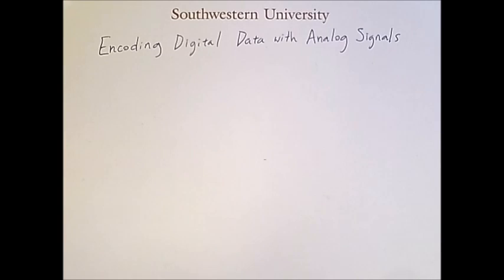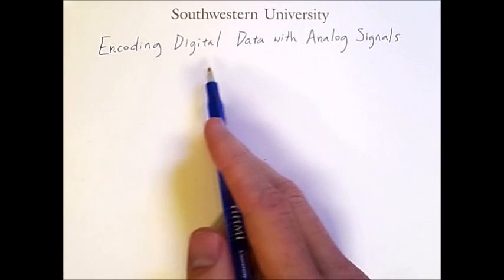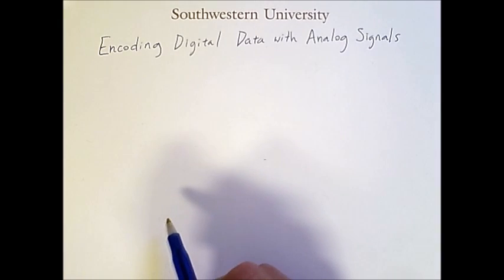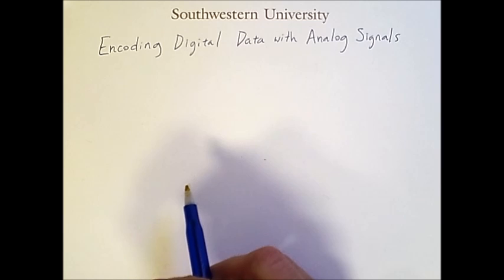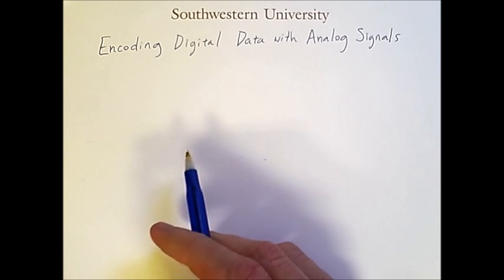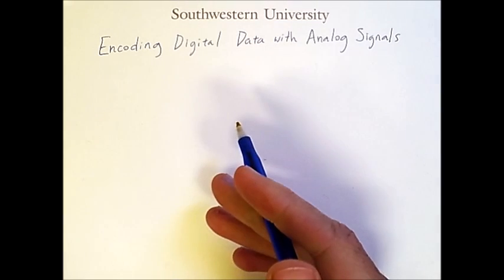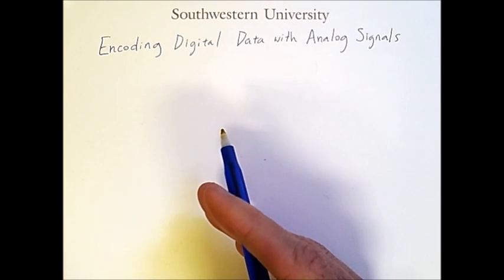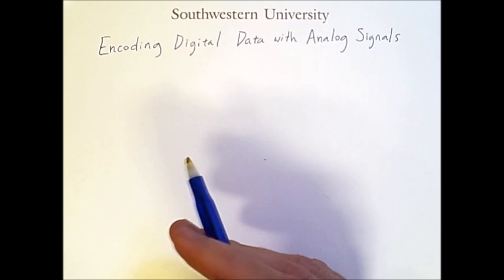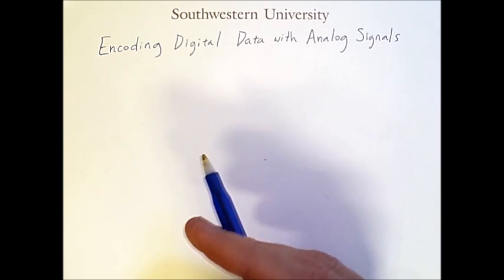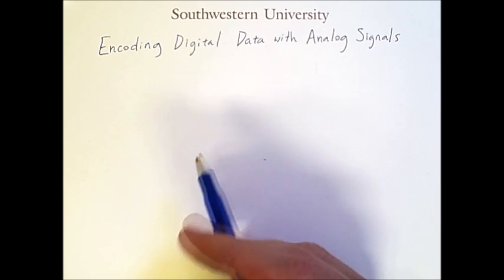This video describes how to encode digital data using analog signals. This can be done by changing the amplitude, frequency, or phase of a periodic repeating wave.